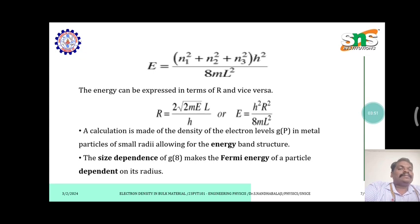A calculation is made of the density of the electron levels in metal particles of small radii allowing for the energy band structure. The size dependence of g(E) makes the Fermi energy of a particle dependent on its radius.